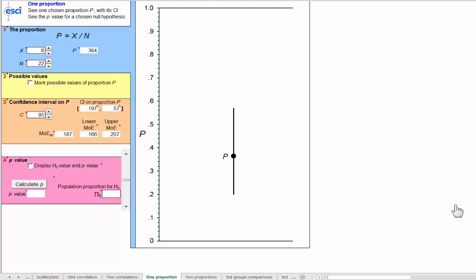Proportions. A proportion can be a really useful effect size measure and it can be applicable when we have merely categorical or nominal data. None of this fancy interval data stuff.